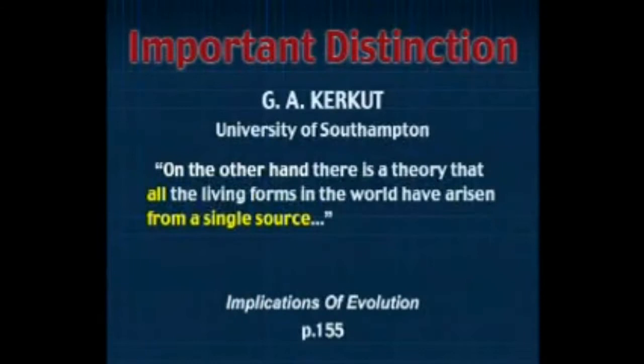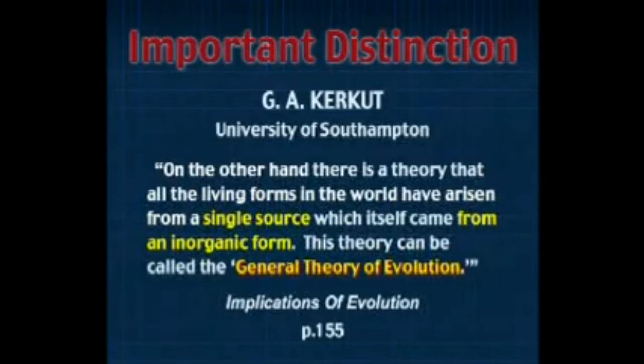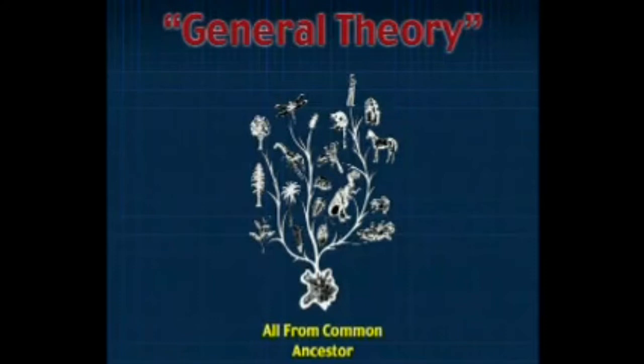He makes a distinction between that and another concept. On the other hand, he says, there is a theory that all the living forms in the world have arisen from a single source, which itself came from an inorganic form. This can be called the general theory of evolution. This is the issue — not the special theory, which we can see and is not really an issue — but the idea that all came from a single source and from an inorganic form, illustrated here in this tree of life in the typical textbook. This is the general theory, and that is the issue. If we do not distinguish those concepts, we have a lot of misunderstanding.